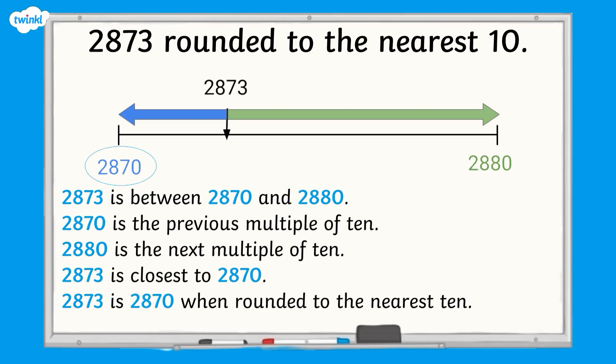2,873 is 2,870 when rounded to the nearest 10.